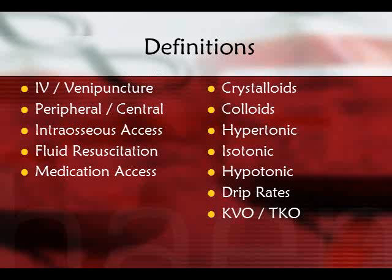We have a couple of different types of fluids: crystalloids and colloids. Crystalloid solutions have a crystal base — think salt or sugar. Normal saline is salt and water, dextrose 5% in water is a crystalloid, and lactated Ringer's is special because it contains different types of salts. Colloids on the other hand are protein-based. The ultimate colloid is human blood, which is not within the scope of an advanced EMT. Other colloids include albumin, hetastarch, and dextran.